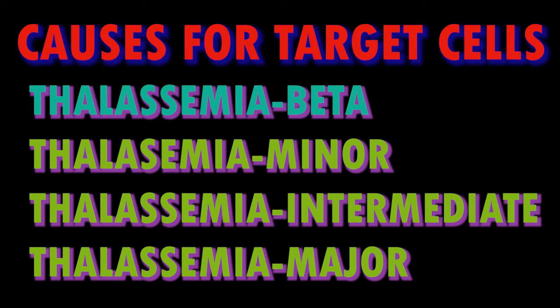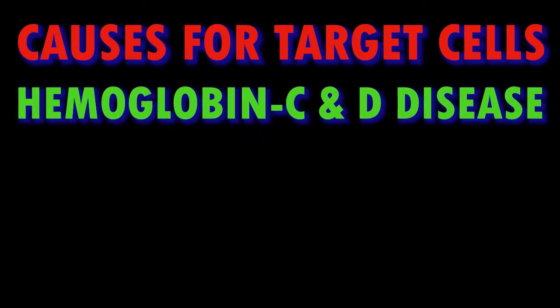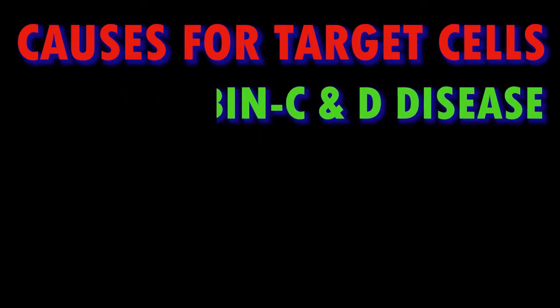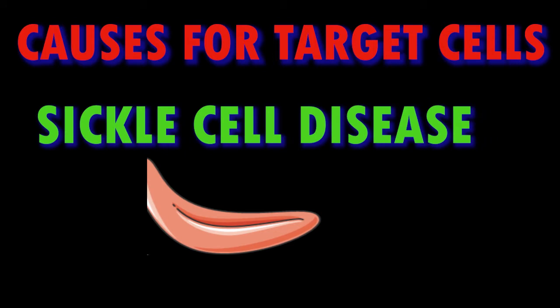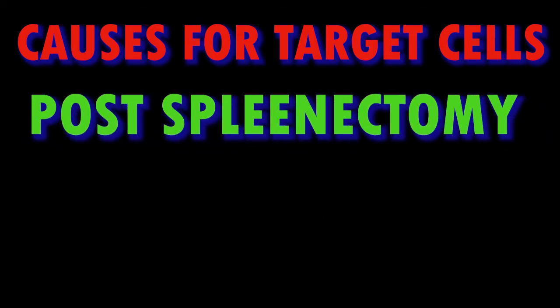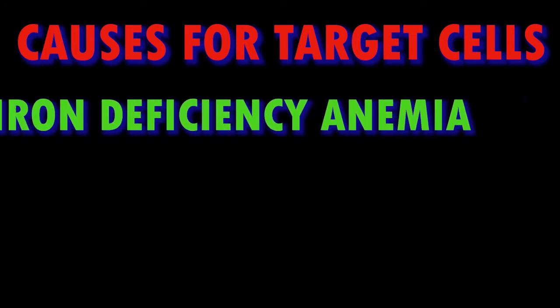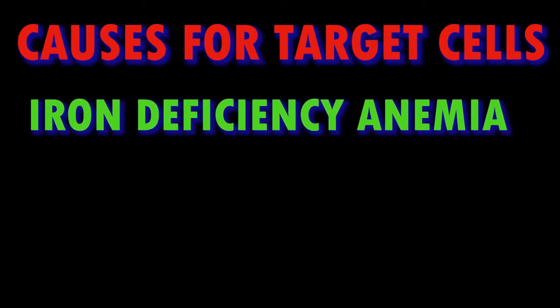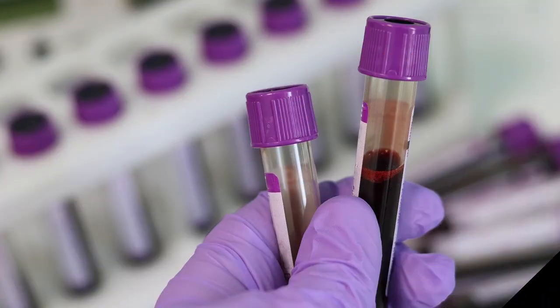The causes for target cells include obstructive liver disease, thalassemia, hemoglobinopathies like hemoglobin C and D disease, sickle cell disease, after splenectomy, and in some cases iron deficiency anemia. Artificial target cells can also be present in some smears due to problems in drying.